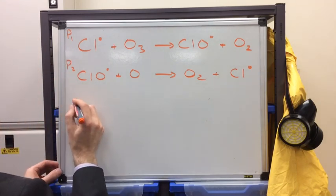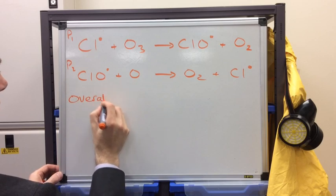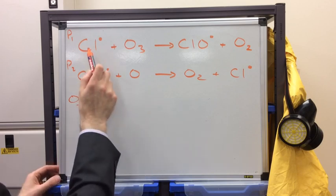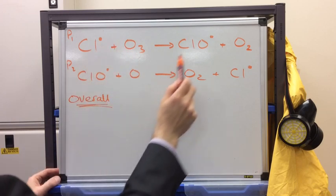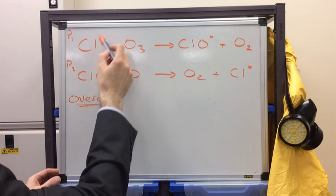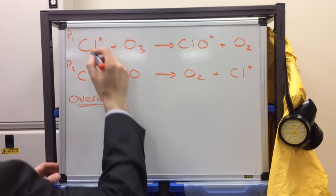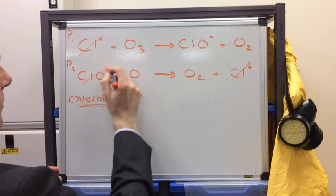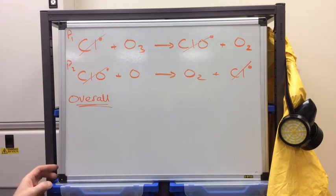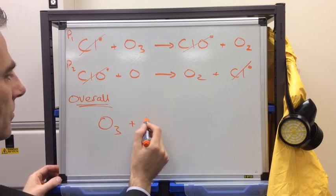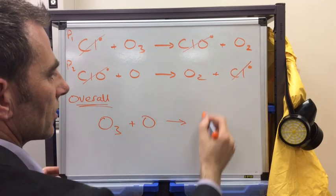What we're going to do now is work out the overall equation for these two propagation steps. If you treat it like a simultaneous equation in maths, we're going to add all of the reactants together, and all of the products together. You can see that we'll have a chlorine radical on either side of the overall equation. So we'll just cancel those out, and we'll also have this ClO radical on either side of the overall equation. What we're left with is O3 plus O makes two O2s.